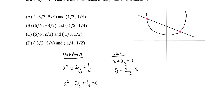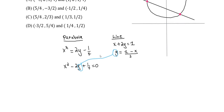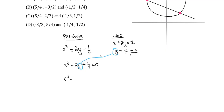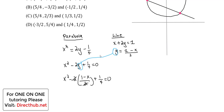So what we're going to do is take this y and plug it in here. We take the y from the line and plug it into the parabola equation. What we get is x squared minus 2 times (1 minus x) divided by 2, plus 1 fourth, equals 0. The twos cancel out.